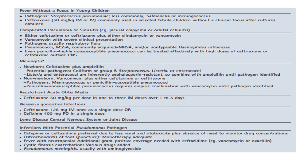Now let's briefly discuss indications where third and fourth generation parenteral cephalosporins are used. They are used in cases of fever without a focus in young children, where pathogens can be Streptococcus pneumoniae and less commonly Salmonella or meningococcus; Ceftriaxone is usually used. In complicated pneumonia or sinusitis like empyema or orbital cellulitis, either Cefotaxime or Ceftriaxone with clindamycin or vancomycin is used. In meningitis in newborns, a combination of Cefotaxime with ampicillin is used — note that Ceftriaxone is not used in newborns due to risks of biliary sludging, jaundice, and calcium deposits in lungs and kidneys. In recalcitrant acute otitis media, Ceftriaxone is often used. For Neisseria gonorrhoeae infection, Ceftriaxone or Cefixime is used. Infections with potential Pseudomonas pathogens require Cefepime or Ceftazidime in combination with an aminoglycoside.